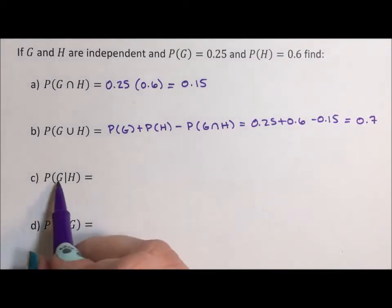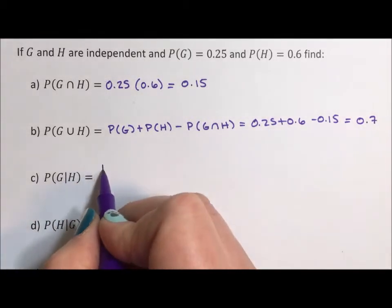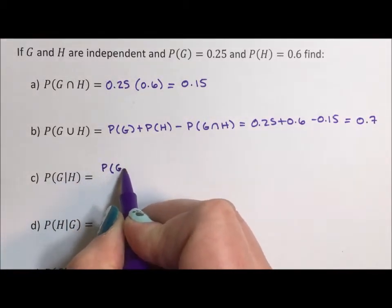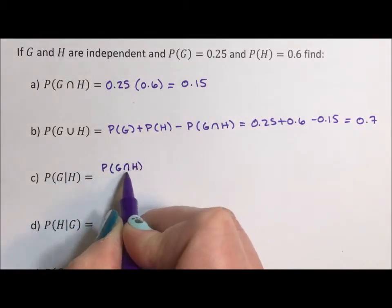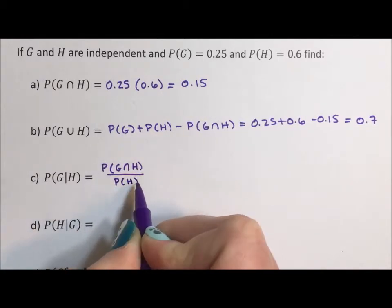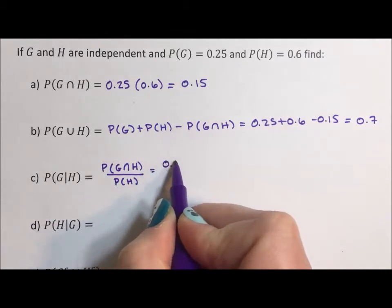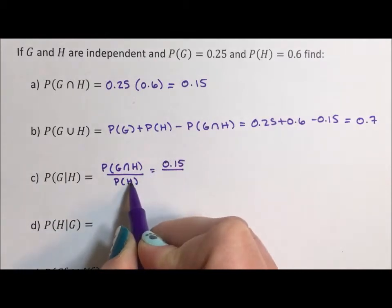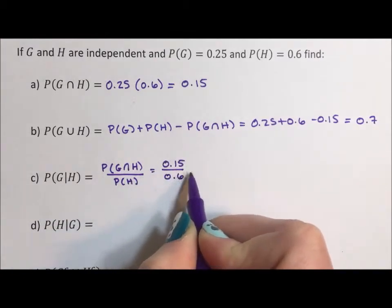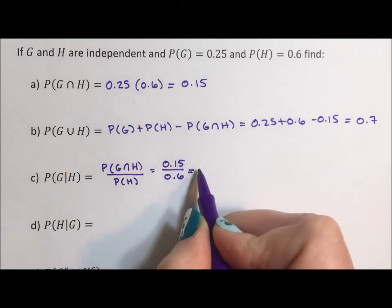Okay, now the probability of G given H is the probability of G intersection H divided by the probability of H. And the probability of G intersection H is 0.15, and the probability of H is 0.6. And this becomes 0.25.